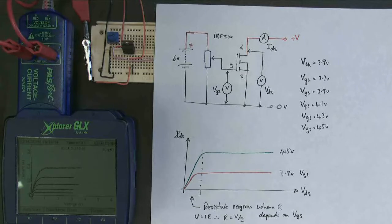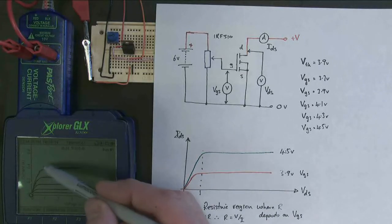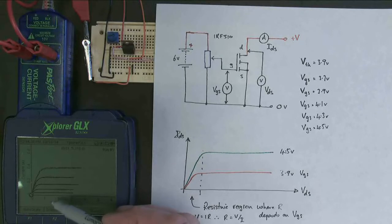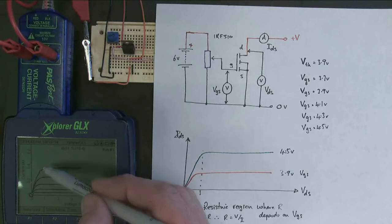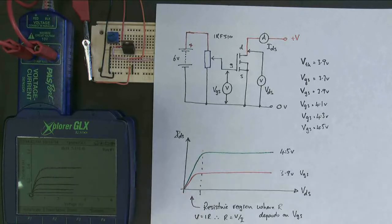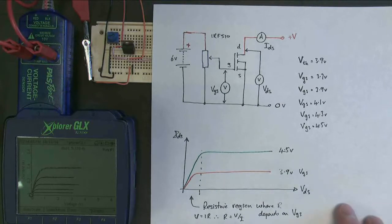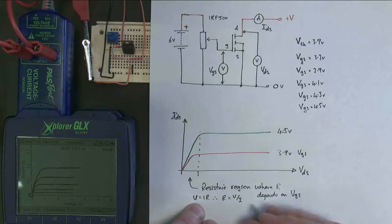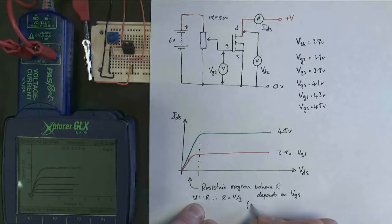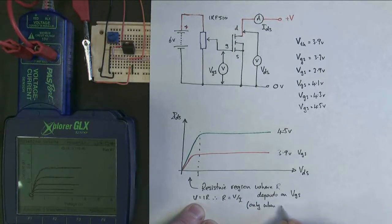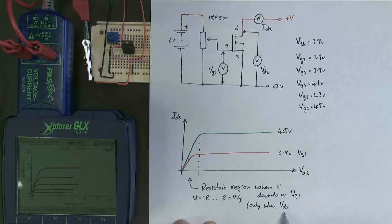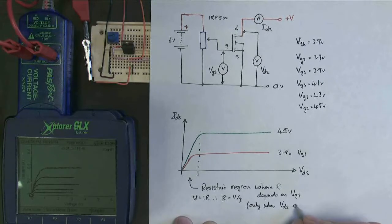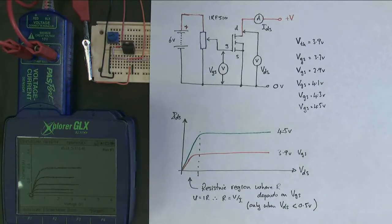But notice on our data logger, by the time you get to one volt, this one volt just here, look, that behavior has completely ceased. So we must put a little footnote on here, and say, only when VDS, not GS, VDS, the drain source voltage, is less than about 0.5 volts. So for small voltages, for small voltages, the MOSFET behaves like a resistor.